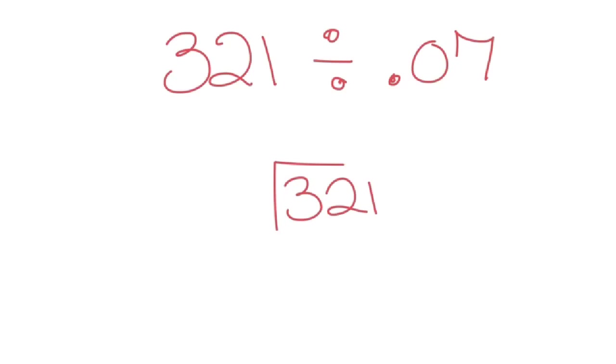Let's do 321 divided by 0.07 and let's see what happens. Okay? So 321 divided by 0.07. First thing we want to do is bump our decimal one, two places to get it to be a whole number and to the wall. Whatever we do to the divisor, we must do to the dividend.